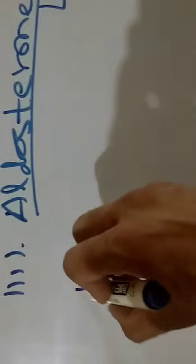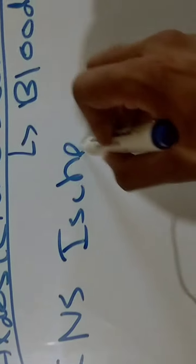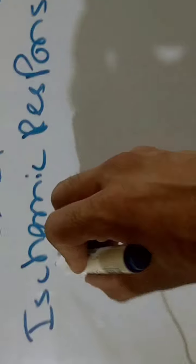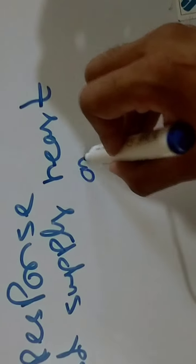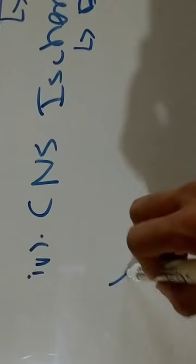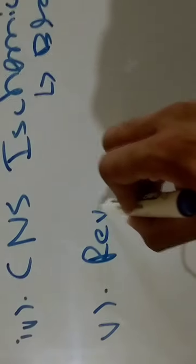Number four is the CNS ischemic response, which is activated and delivers more blood supply to the heart and brain. Number five is the reverse stress relaxation phenomenon.